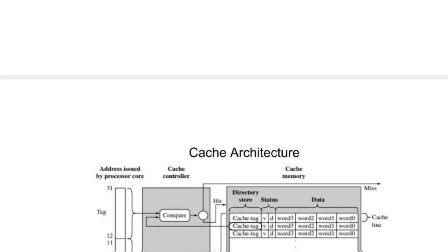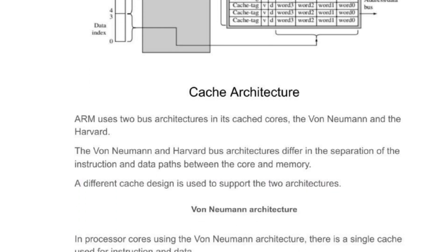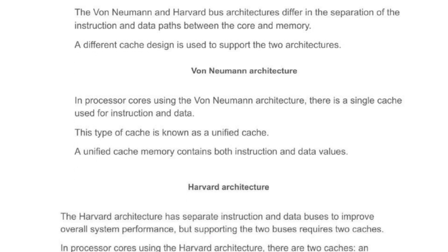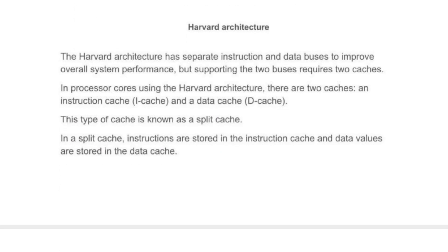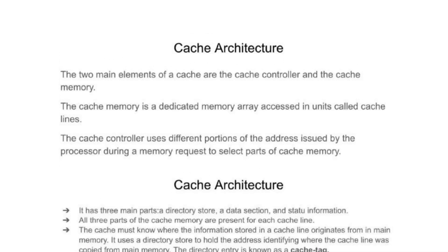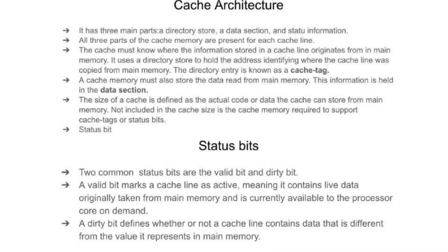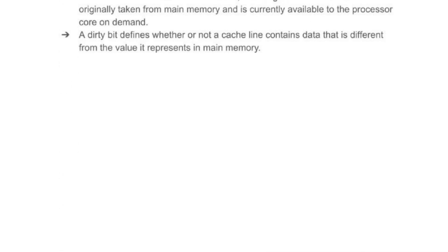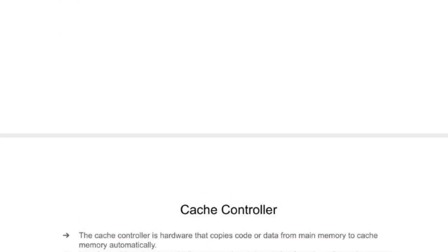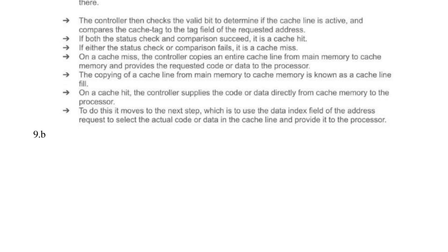Step 12: How to structure 10-mark answers. Start with a definition. Add a diagram and label everything. Explain each part in 2 to 3 lines. Use bullet points where possible. Add a small code snippet if applicable. Direct hit: make your answer 1.5 pages with proper structure — 9 or 10 marks easily.